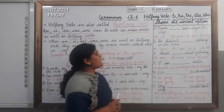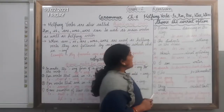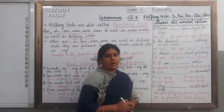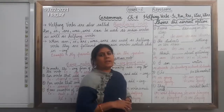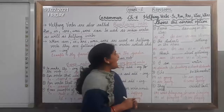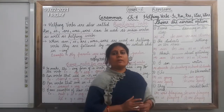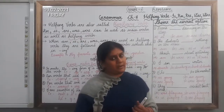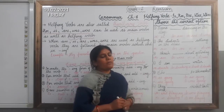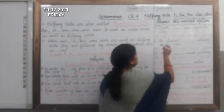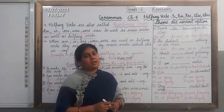The first question is: Rima ___ dancing on the stage. Four options are given: A is am, B is is, C is are, and D is was. Now here we are talking about only one person, Rima, and this sentence is in the present tense. In the present tense we use the helping verbs is, am, are. So here we are talking about a singular noun, so which helping verb we will use? Yes, we will use is. So the sentence is: Rima is dancing on the stage.